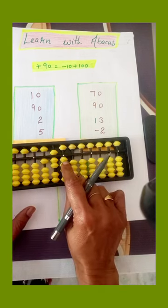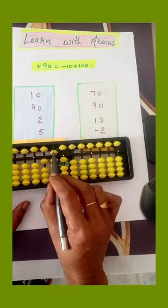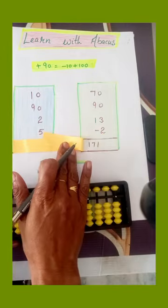13. Minus 2. Remove 2 from here. Now read the answer: 1, 7, 1. 171. Let's check. Yes, we are correct.